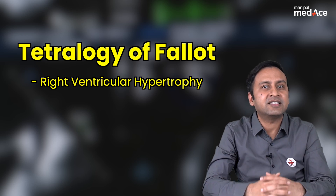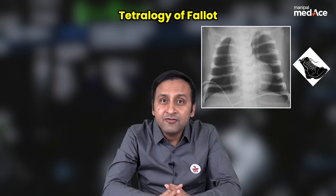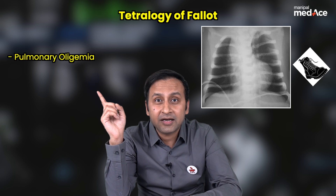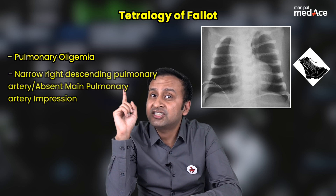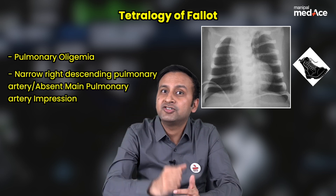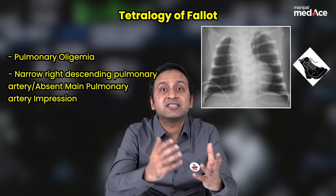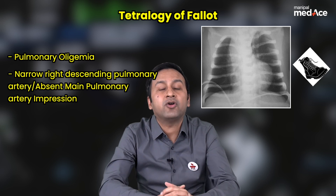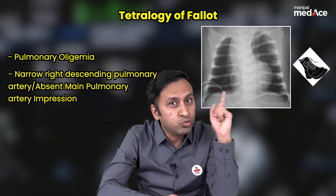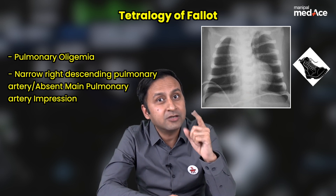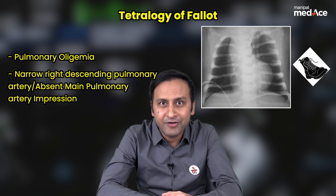What are the other signs that you can see? Look at the lung fields — they are appearing very oligemic. Secondly, look at the right descending pulmonary arterial impression; it is abnormally narrow. So there are signs of pulmonary oligemia. Apart from this boot-shaped heart, pulmonary oligemia is also seen in patients with tetralogy of Fallot.